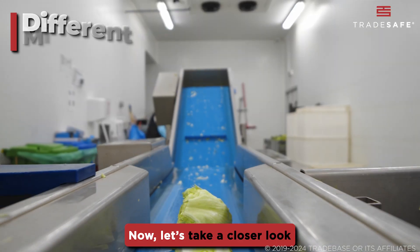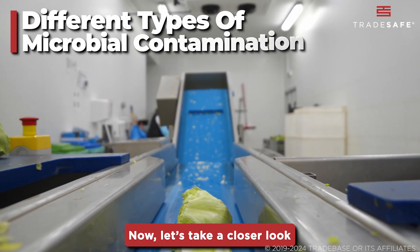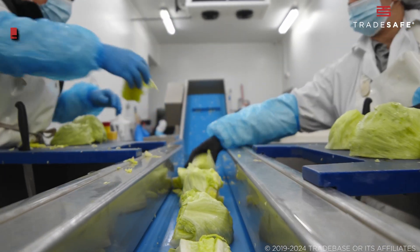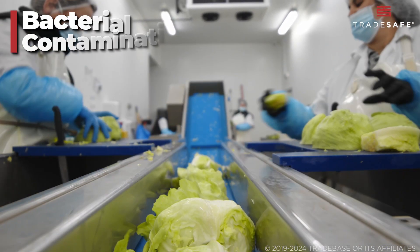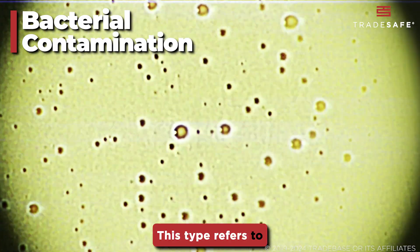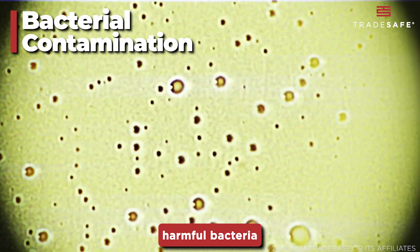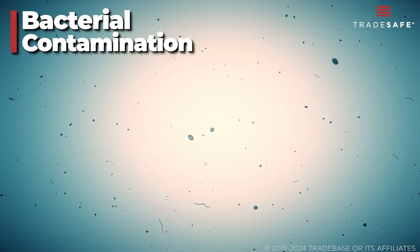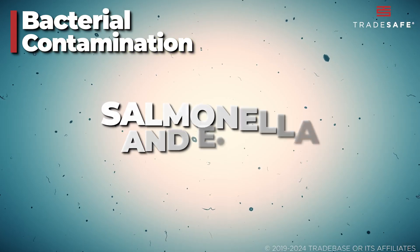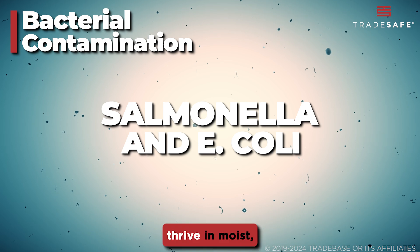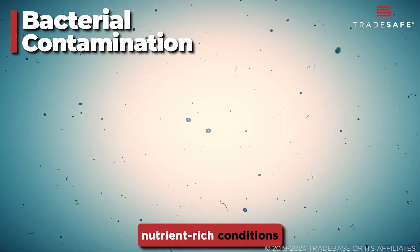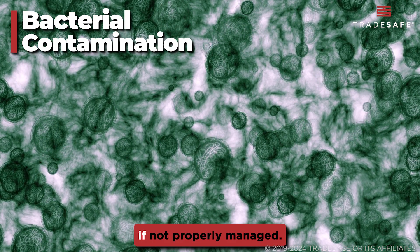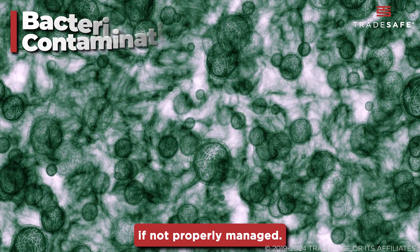Now let's take a closer look at the different types of microbial contamination, starting with bacterial contamination. This type refers to harmful bacteria that can infect various environments. Bacteria like Salmonella and E. coli thrive in moist, nutrient-rich conditions and can multiply rapidly if not properly managed.